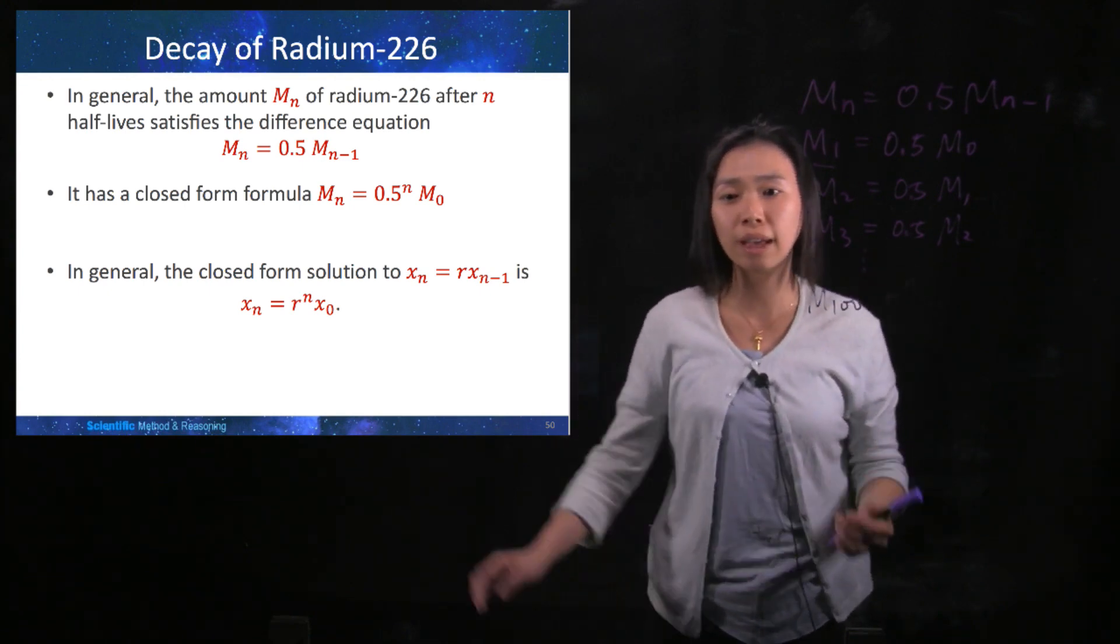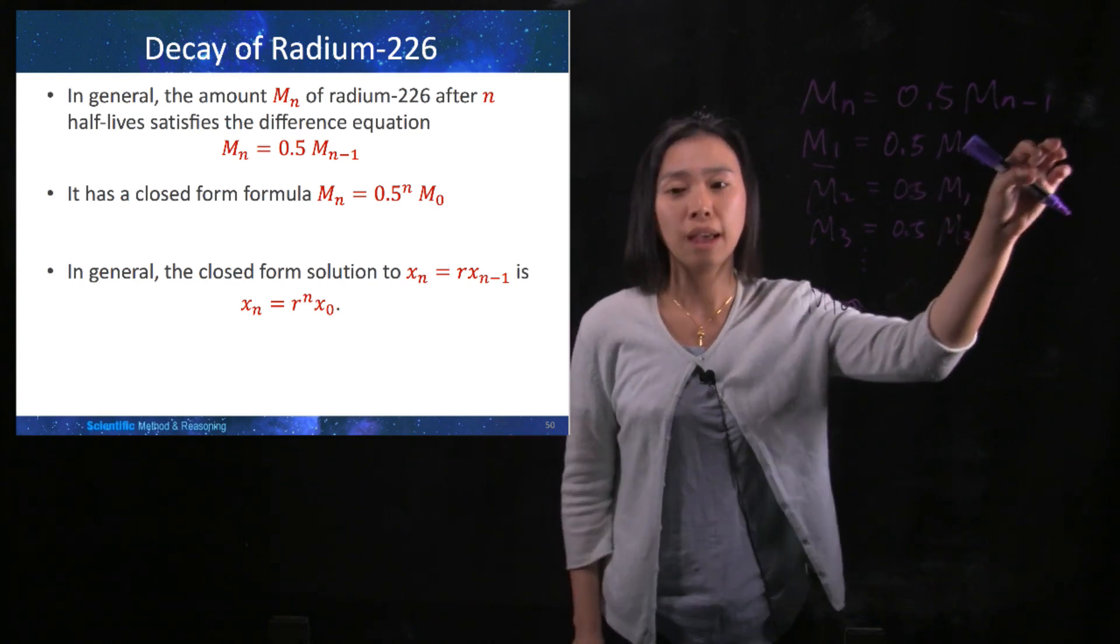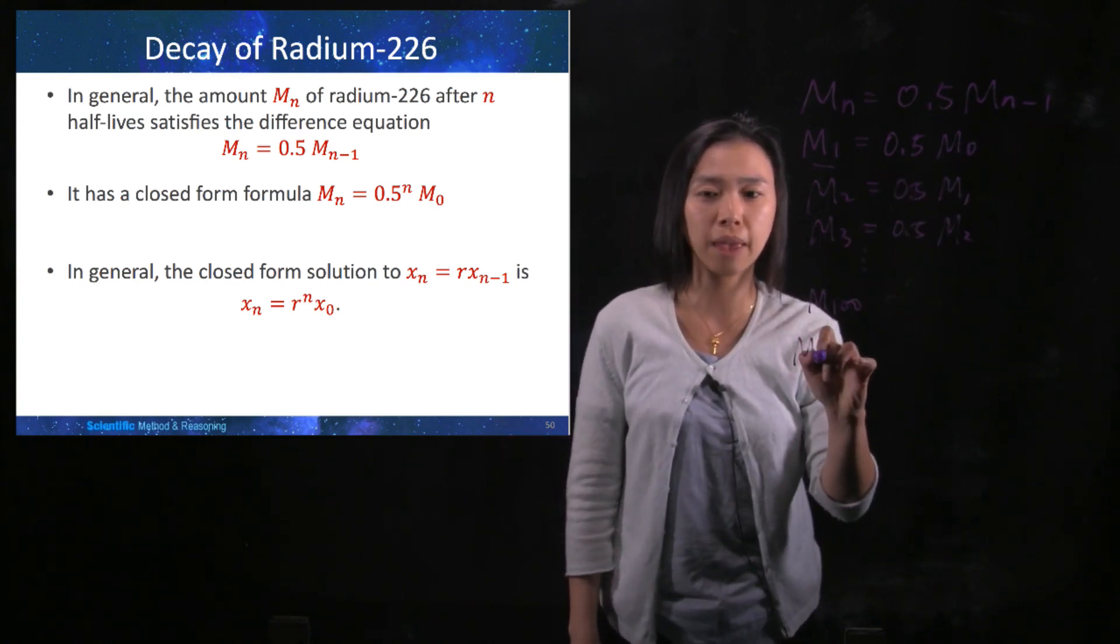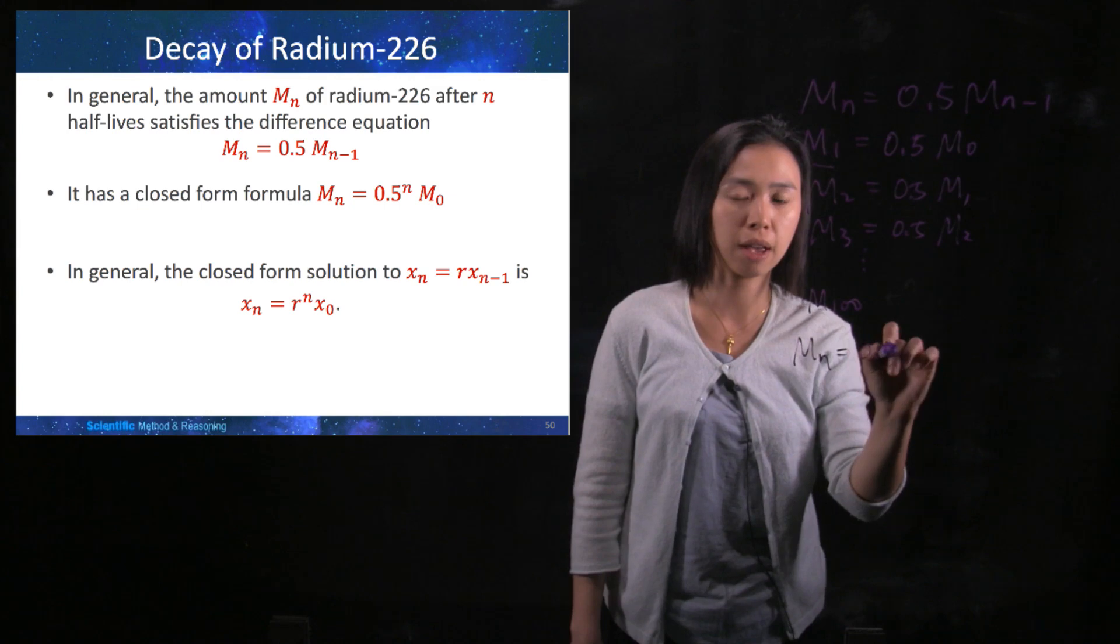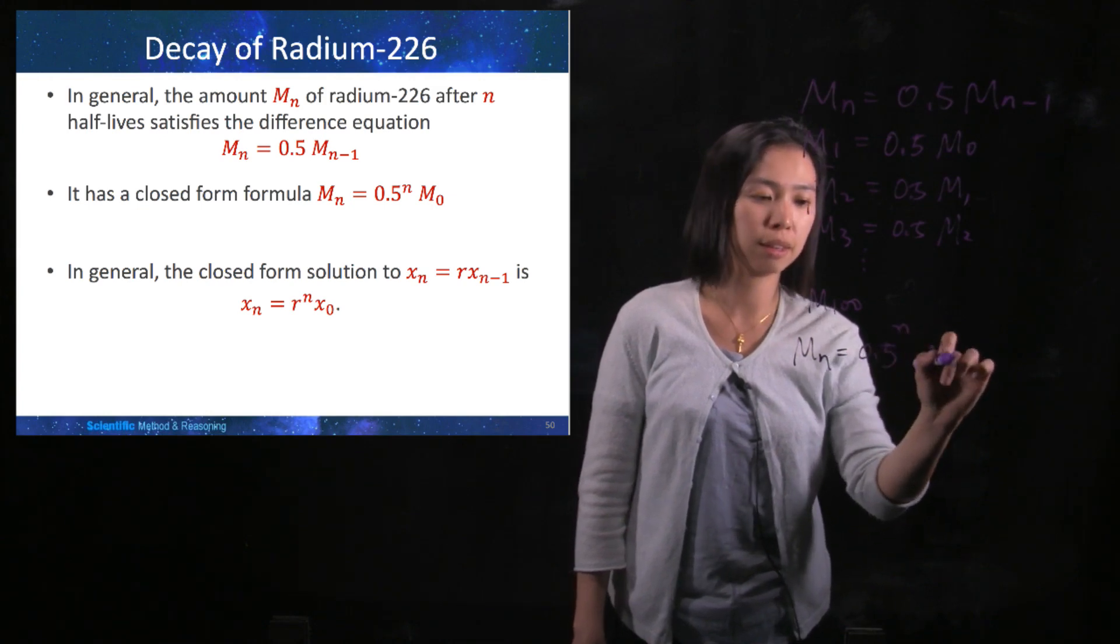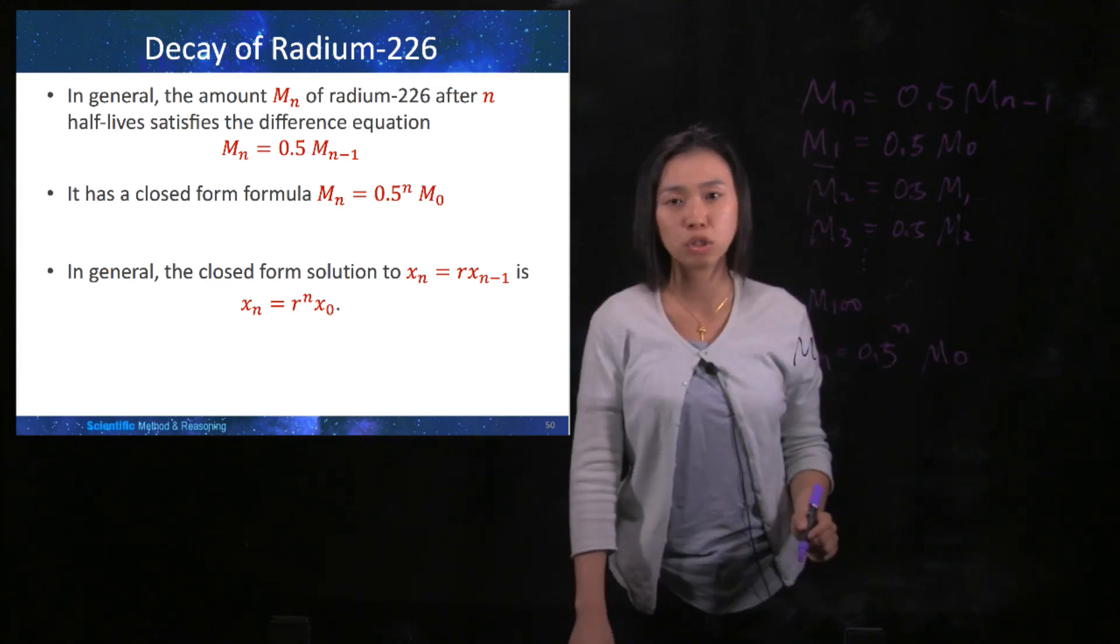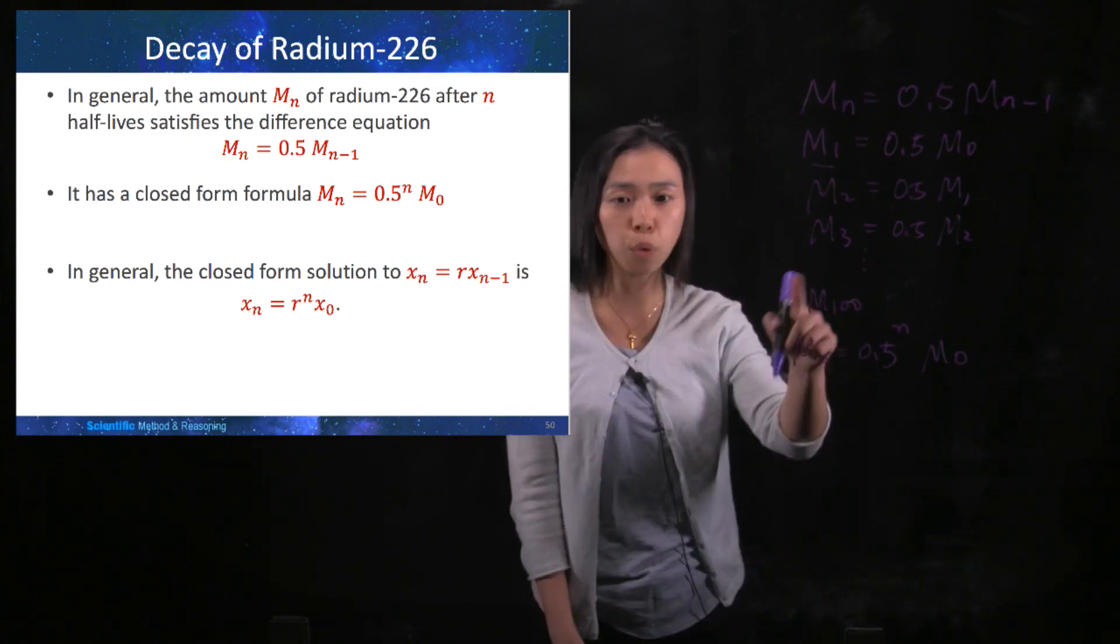But in the previous video, we learned that this equation has a closed form solution: Mn = 0.5^n multiplied by the initial condition.